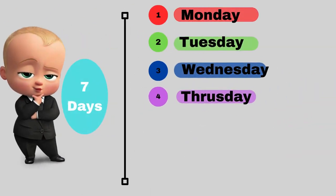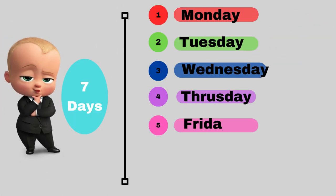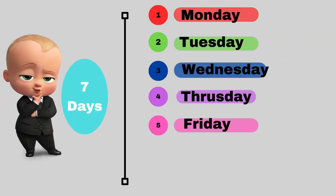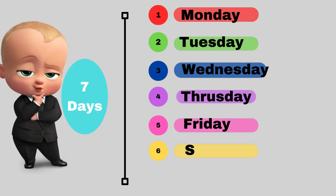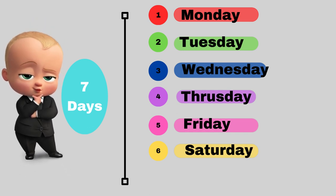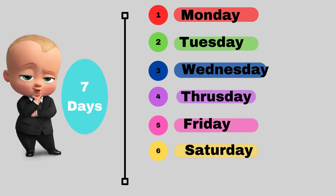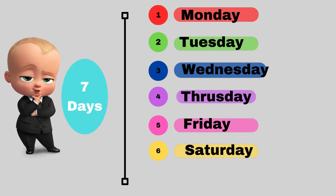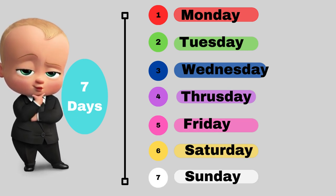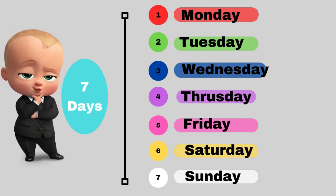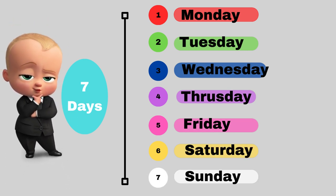Fourth day of the week is Thursday. Fifth day of the week is Friday. Sixth day of the week is Saturday. Seventh day of the week is Sunday.